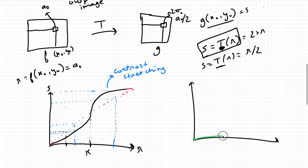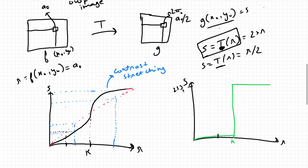Another kind of transformation uses K as a threshold with a step function. Any intensity in the input image lower than K maps to zero, and any intensity greater than K maps to the maximum value. For an 8-bit grayscale image, values above K become 255 and values below K become 0. This is a thresholding transformation.